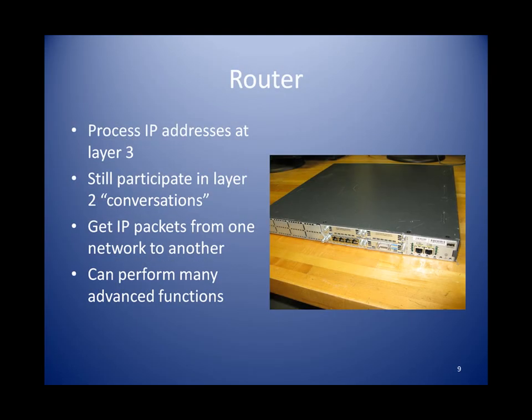Moving up to Layer 3, we have the router. The router's job is to forward IP packets to the correct network. Ethernet frames do not live beyond their own network, so we use the IP addresses contained within the IP packet for this purpose. Routers forward packets to one another until they finally reach their proper destinations. Routers still pay attention to Layer 2 because they have Ethernet interfaces and MAC addresses, but router decisions are made at Layer 3. Routers can also perform many other functions, such as firewall rules or access control lists to filter traffic, handle quality of service, and even act as DHCP or TFTP servers. Another common task is Network Address Translation, or NAT.